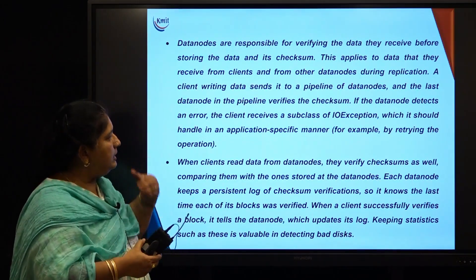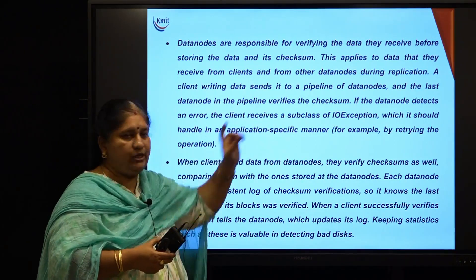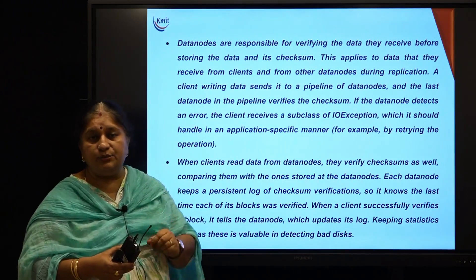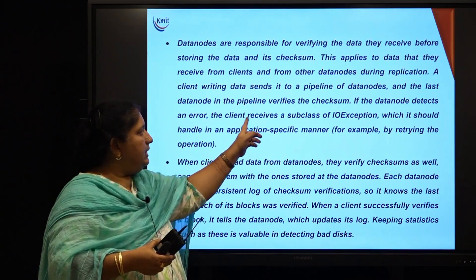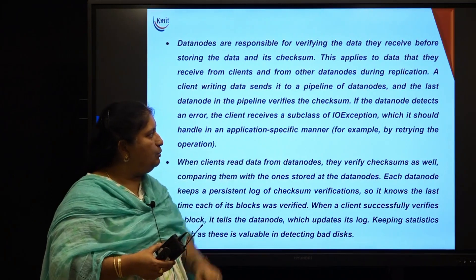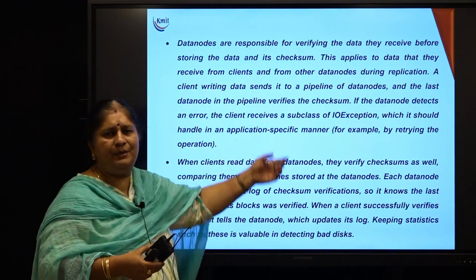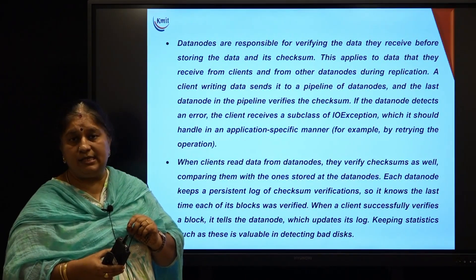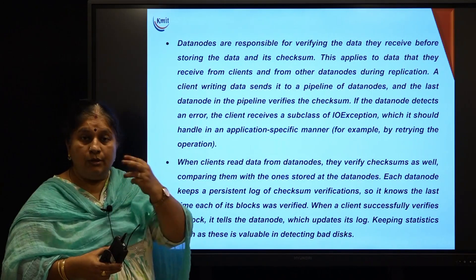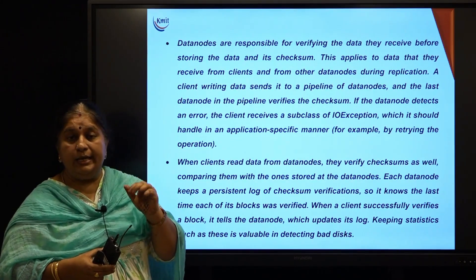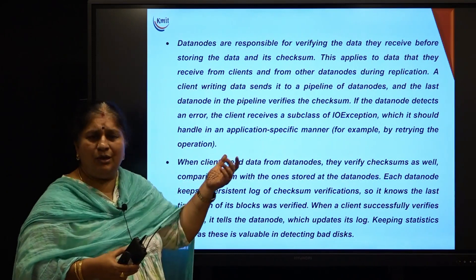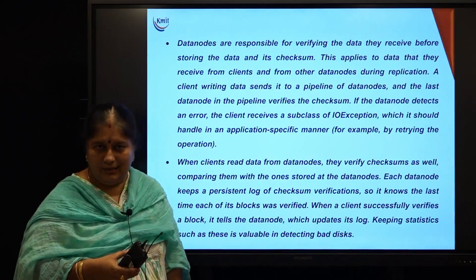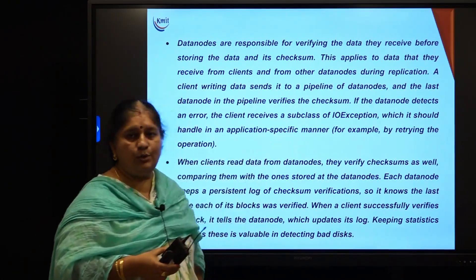The last node in the pipeline verifies the checksum, and if it identifies any errors or mismatch, it receives a subclass of IOException, which is handled in an application-specific manner. Each node informs of any checksum mismatch by throwing an exception, because Hadoop is totally based on Java and we have to work with exception handling.